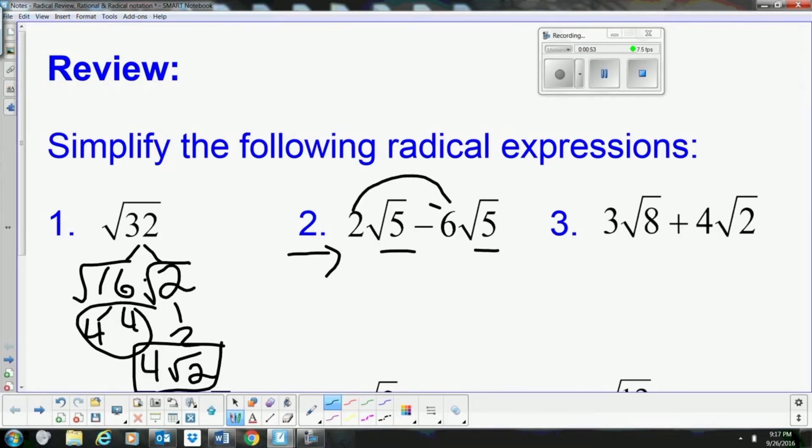So you just simplify the coefficients. 2 minus 6 is negative 4 square root 5, and that's the answer.